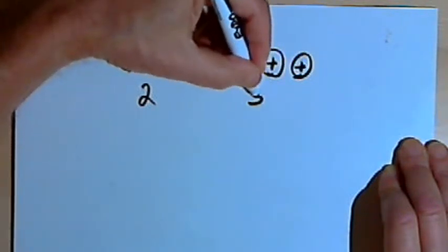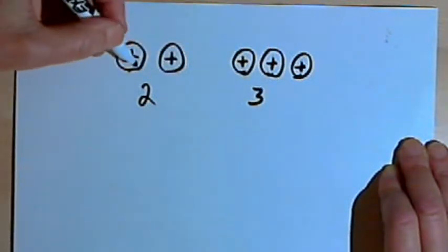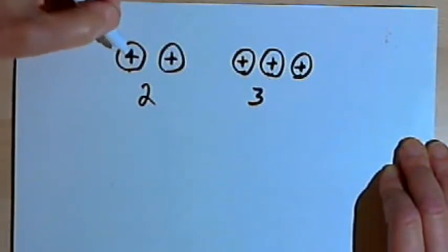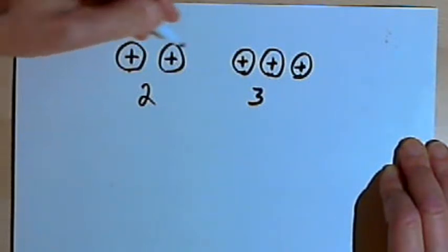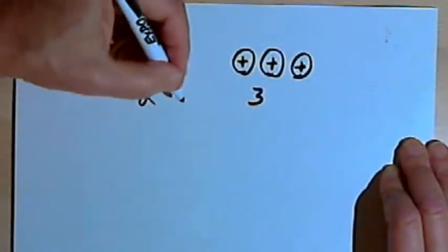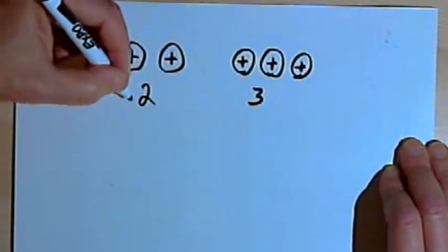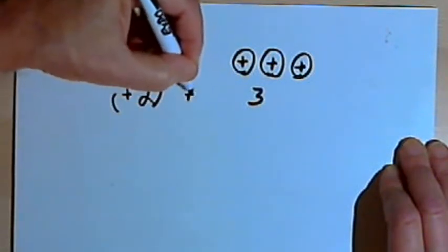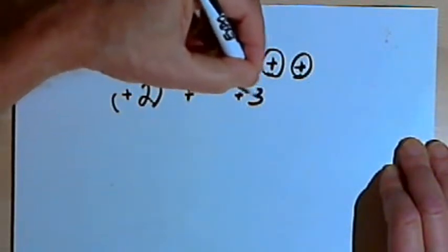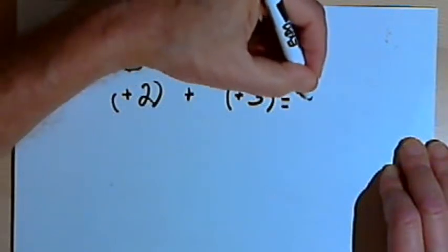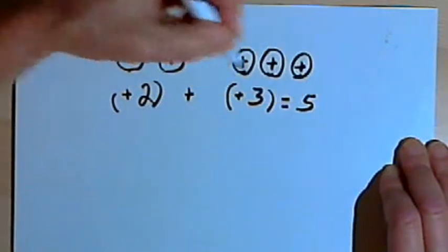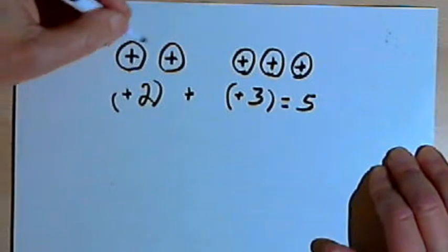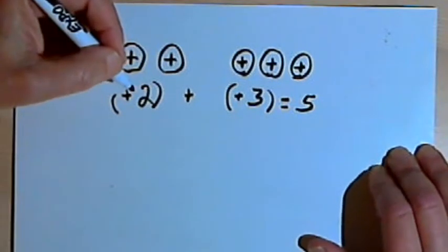So you've got three more points. Now we can count those chips — they're all positive, they're all the same — and we would end up with 5. So we could say that positive 2 plus positive 3 equals 5. And this is something you're probably used to already.